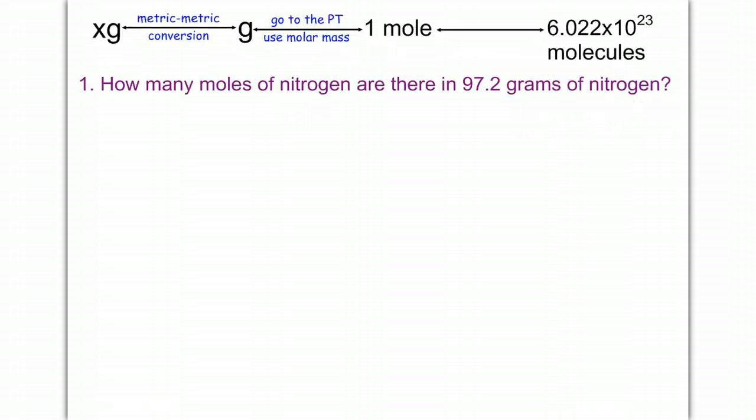So let's do a couple of examples. The first one, how many moles of nitrogen? So what I'm looking for is moles of, and what is nitrogen? We need the formula for this. Nitrogen is a diatomic, so it's not just N, it's N2, and I'm given 97.2 grams of nitrogen. So my given is 97.2 grams of N2,